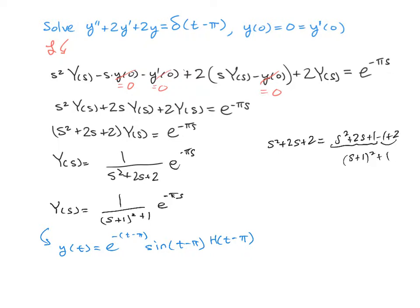They must always be shifted by that same amount. So our little y of t is going to be equal to e to the negative t minus pi times the sine of t minus pi times the Heaviside at t minus pi. As a piecewise defined function, this is zero if t is less than pi, or equal to e to the negative t minus pi sine of t minus pi when t is greater than or equal to pi.